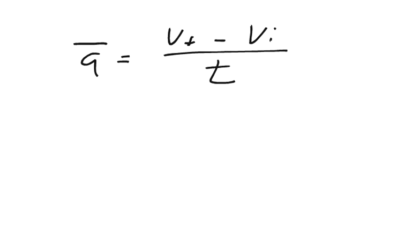So the final velocity was 0, the initial velocity is 10 meters per second, and the acceleration, the average acceleration, is going to equal the instantaneous acceleration along a straight curve.